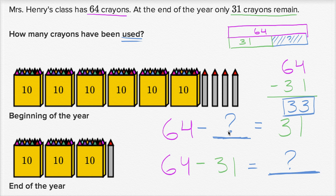And you could check that. 64 minus 33 is 31. Or 64 minus 31 is 33. So 33 crayons have been used.